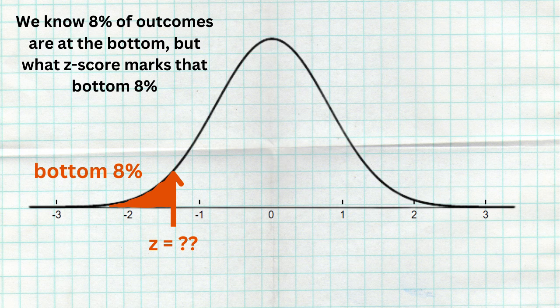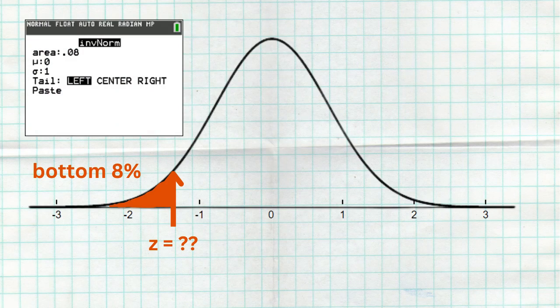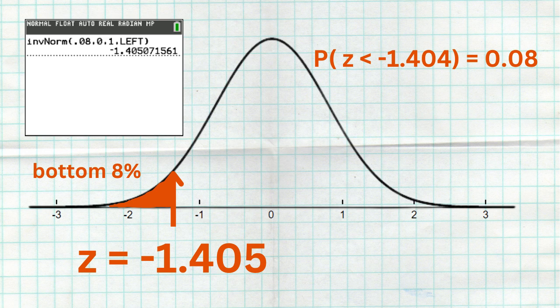In this first example, we're looking at a normal distribution where we've shaded the bottom 8%, and the question is what Z-score represents that bottom 8% to the left. We go to invNorm, type in an area of 0.08, and select left — or if your calculator doesn't have that option, it defaults to left automatically. When you hit enter, you get a Z-score of negative 1.405. That means a Z-score of negative 1.405 marks where that bottom 8% is — and simultaneously, it marks the top 92%, since there's 8% below and 92% above.